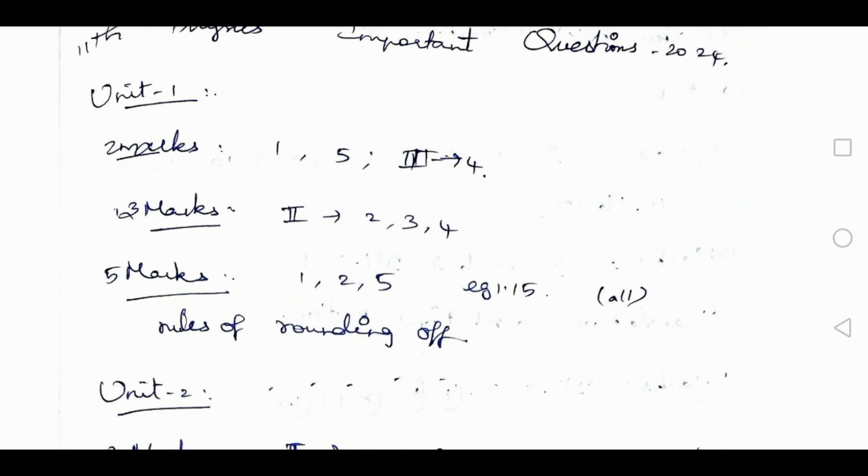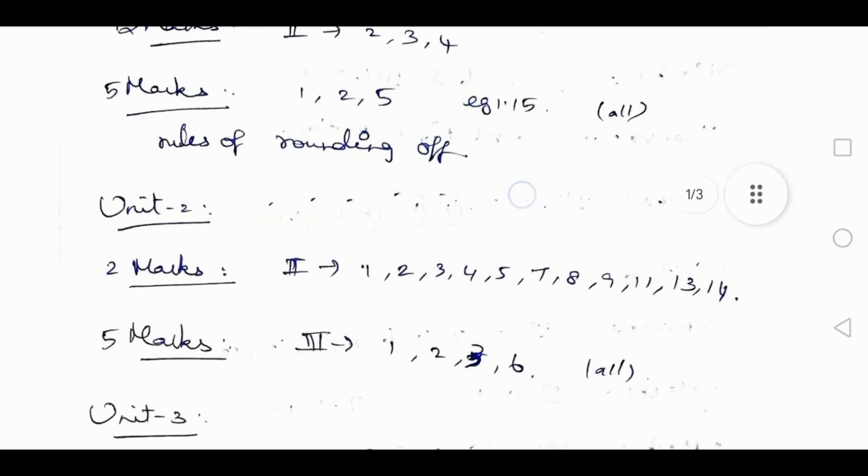2 mark covers 1 to 5. 3 mark covers 2, 3, 4. 5 mark is 3rd rom letter, right? In 3rd rom letter, example 1.15 - in this bracket that means you can do all questions. In 5 mark there are 1 or 2 possibilities, and also rules of rounding off.